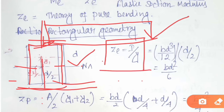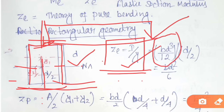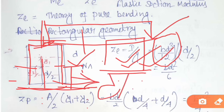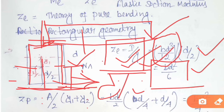Shape factor is the ratio of ZP to ZD, that is plastic section modulus to elastic section modulus. ZD can be easily found out by I/Y, where I is the moment of inertia and Y is the distance from the neutral axis. For rectangular geometry with neutral axis parallel to its width, moment of inertia I = BD³/12. If parallel to its depth, it would be DB³/12. Since the depth is D, the distance Y = D/2. Therefore ZD = BD³/12 divided by D/2, which gives BD²/6.